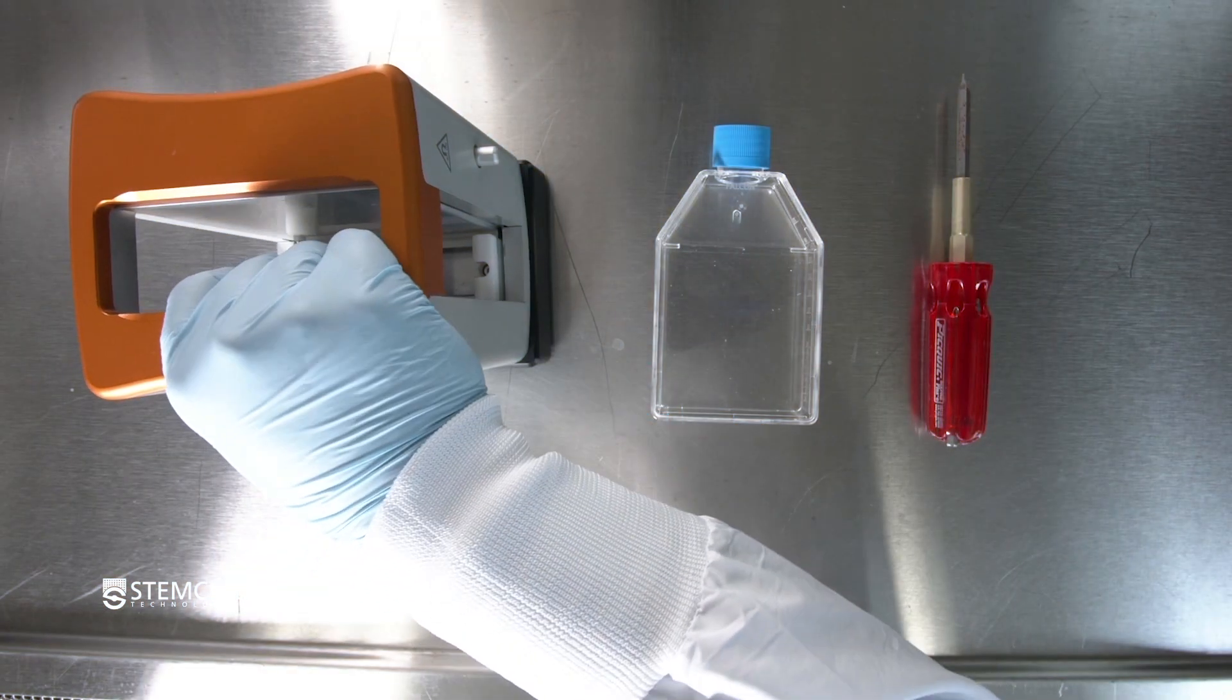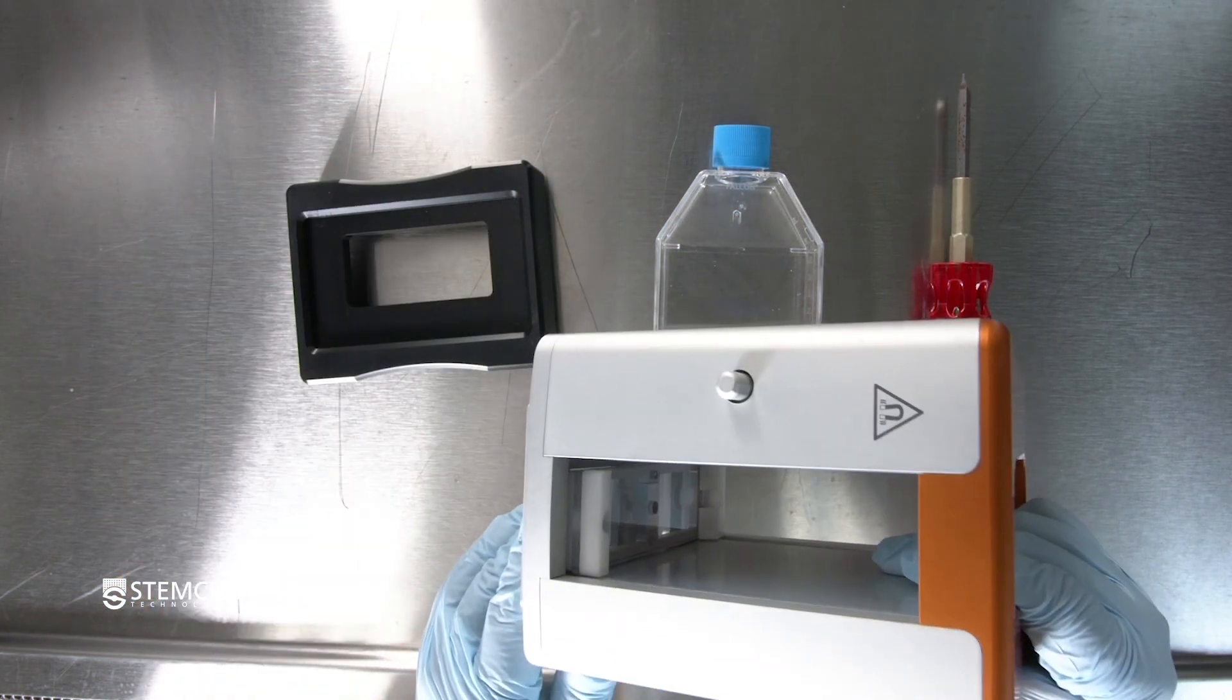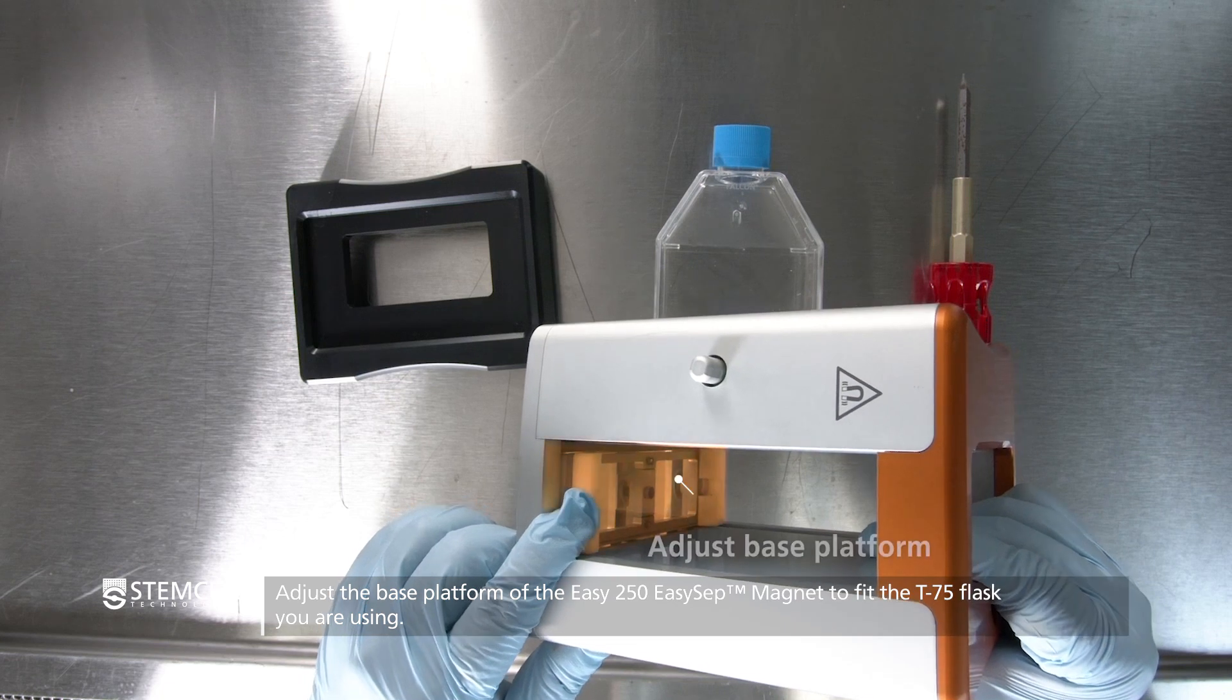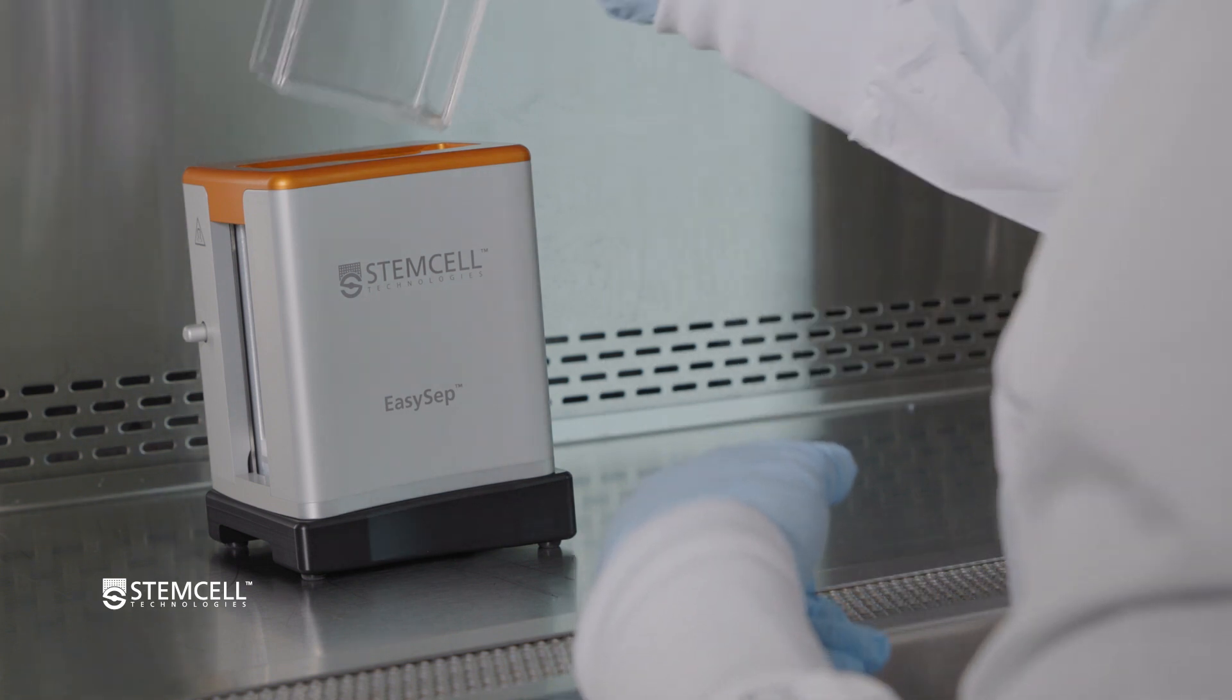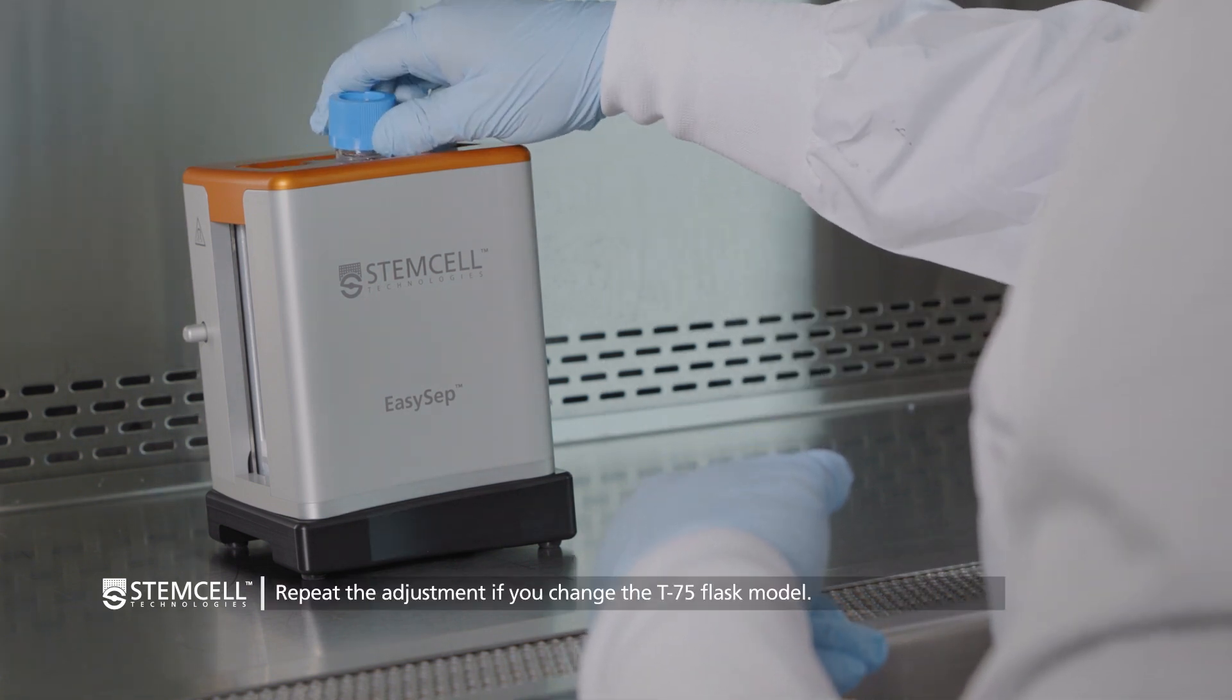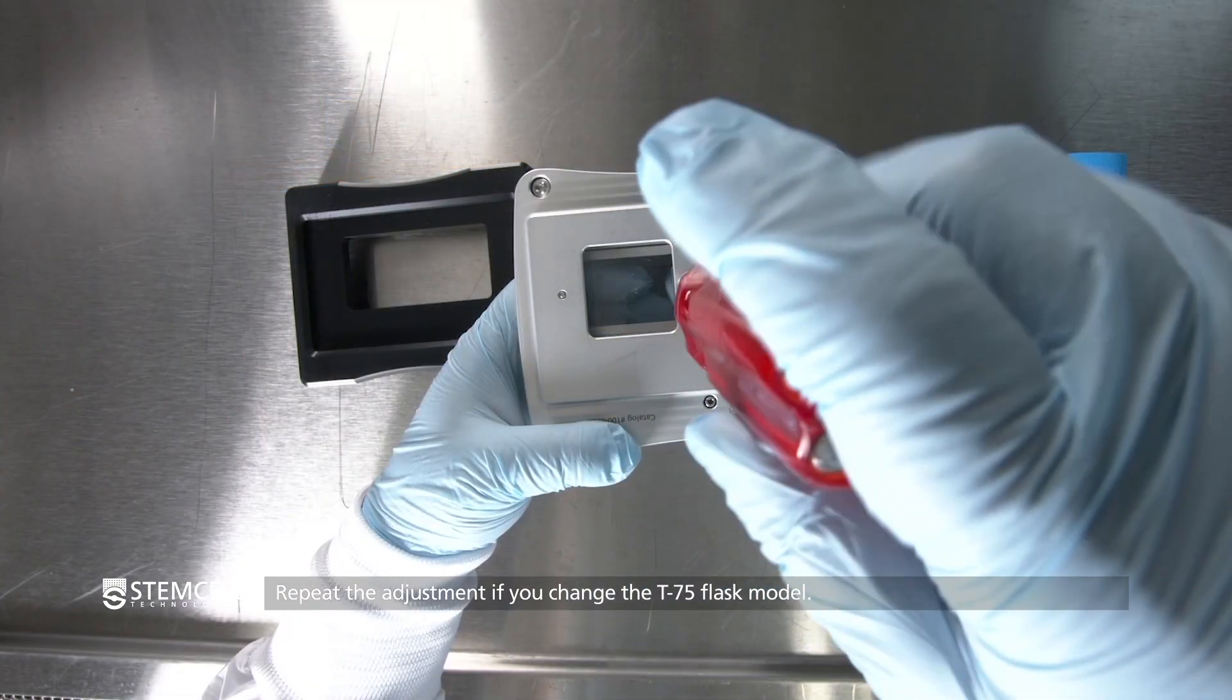If this is your first time using the EZ250 EZ-Set Magnet, you may have to adjust the base platform to fit the T75 flask you're using. This adjustment only has to be done once, but will need to be repeated if you change the T75 flask model.